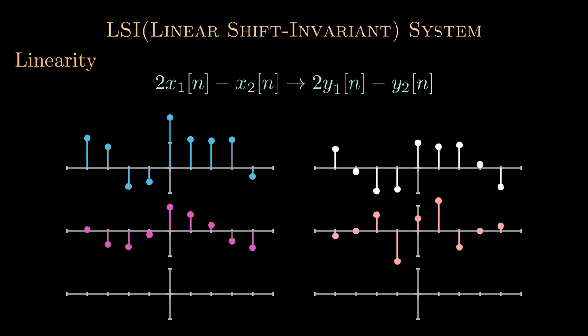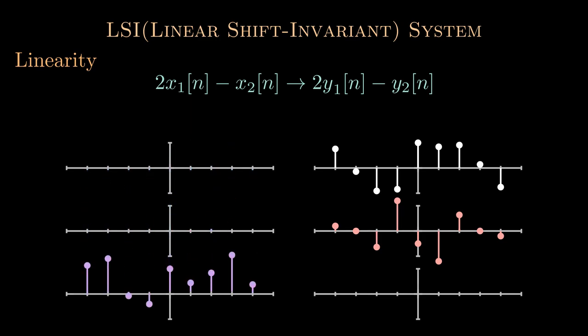Similarly, if we give minus x2[n] to the system, we will get minus y2[n] as the output. Now by the property of linearity, if I give twice x1[n] minus x2[n], I will essentially get twice y1[n] minus y2[n] as the output.